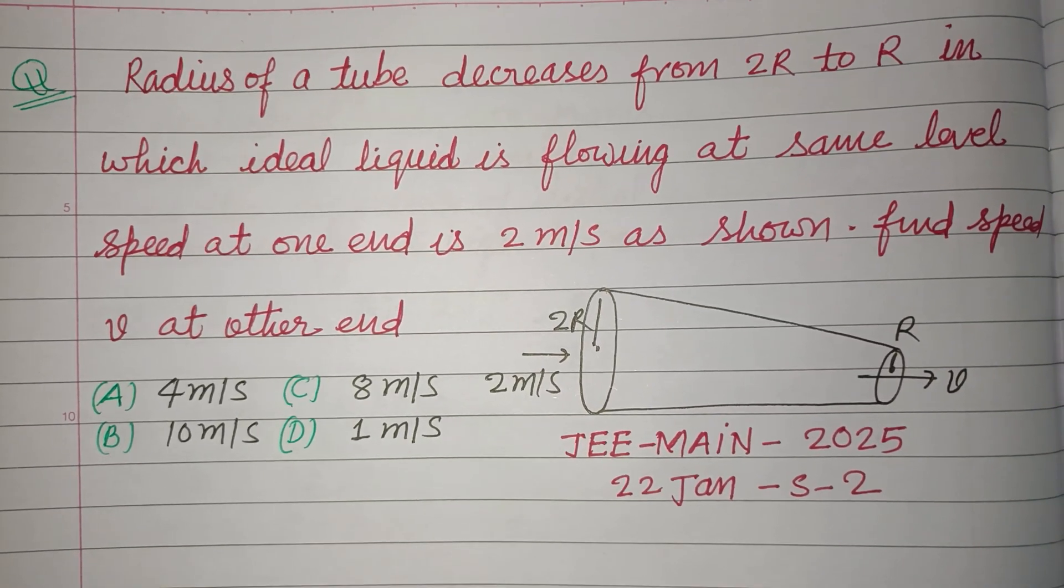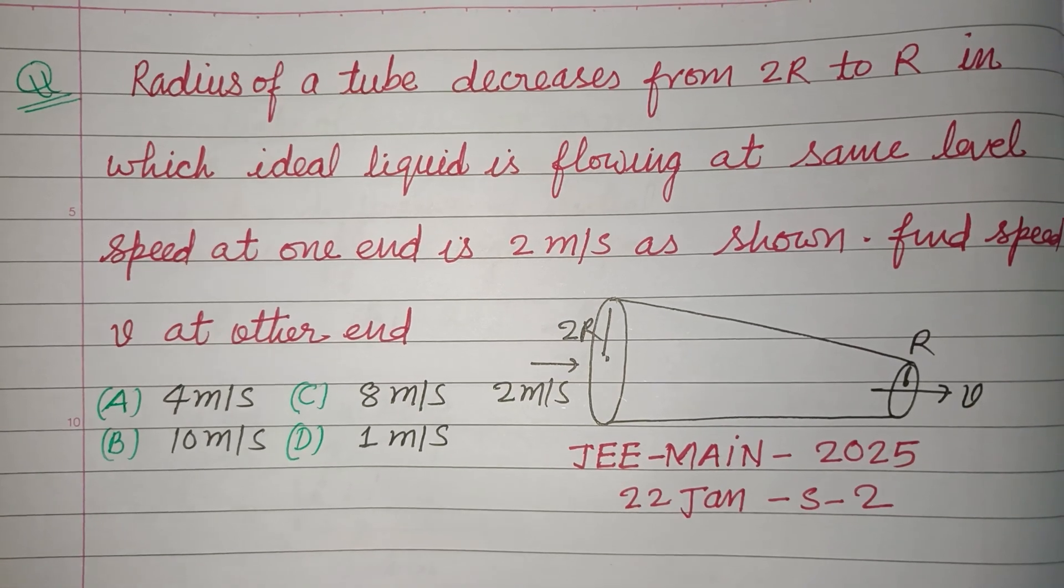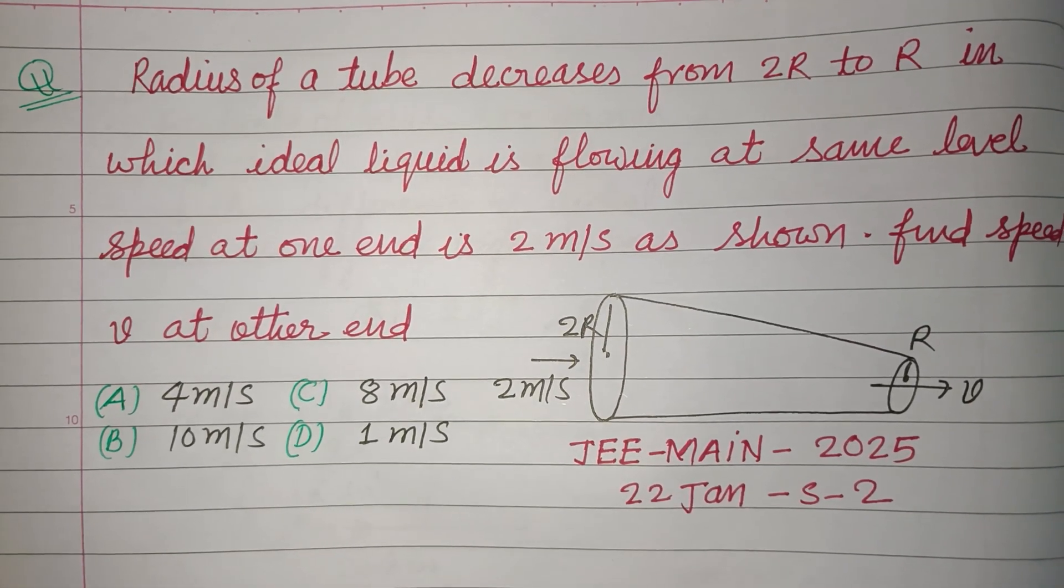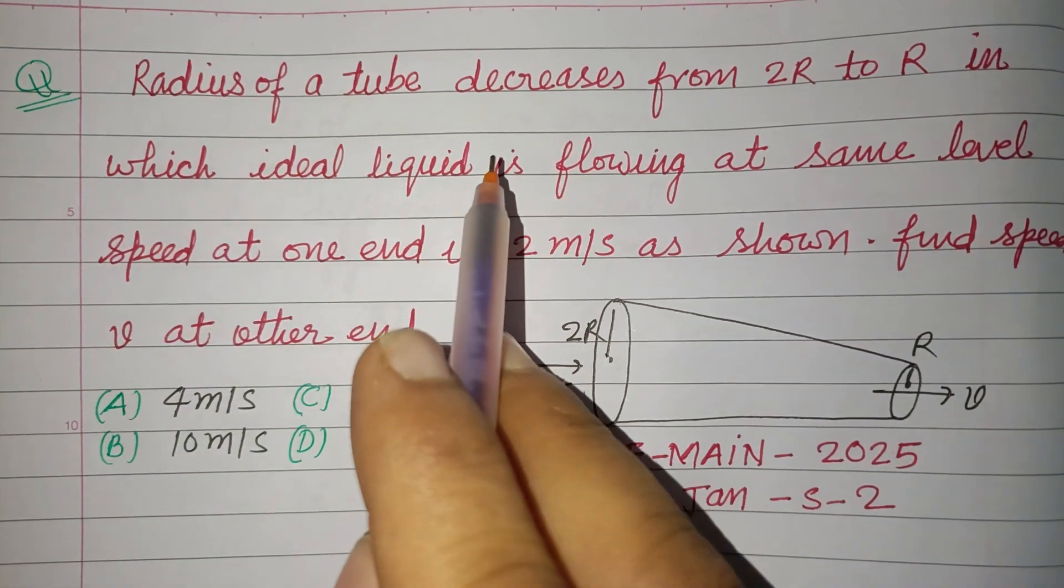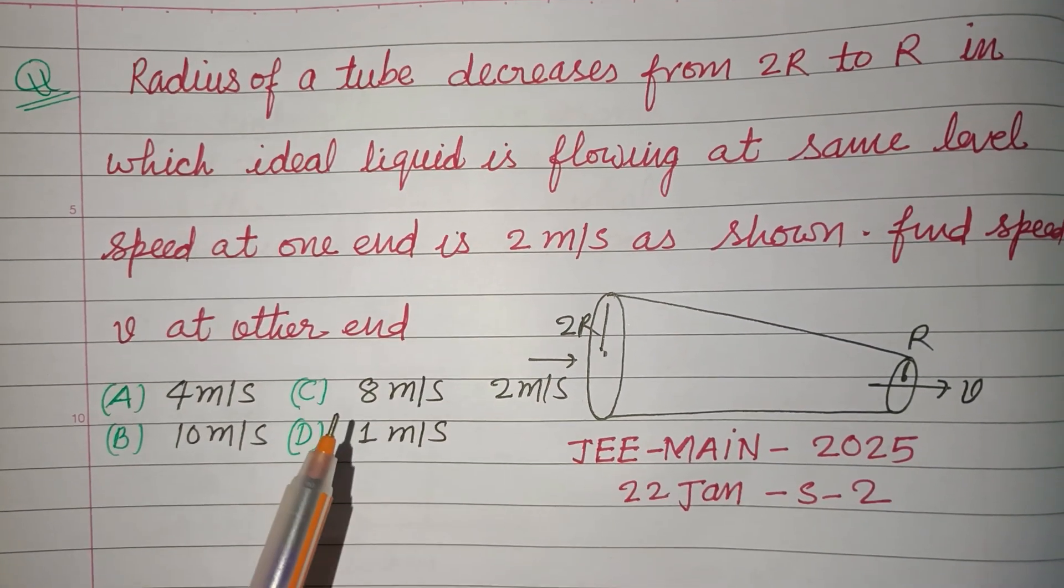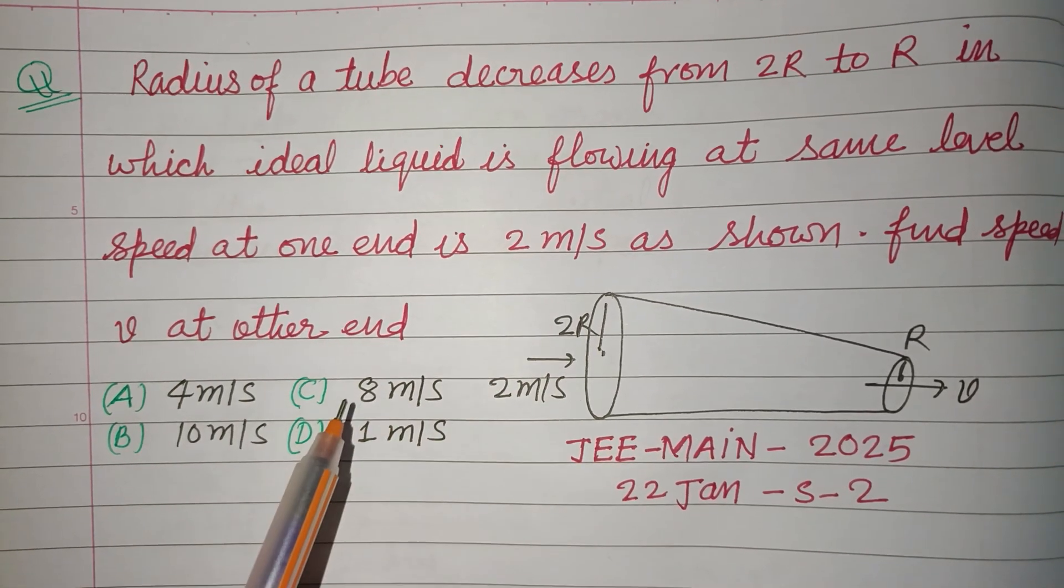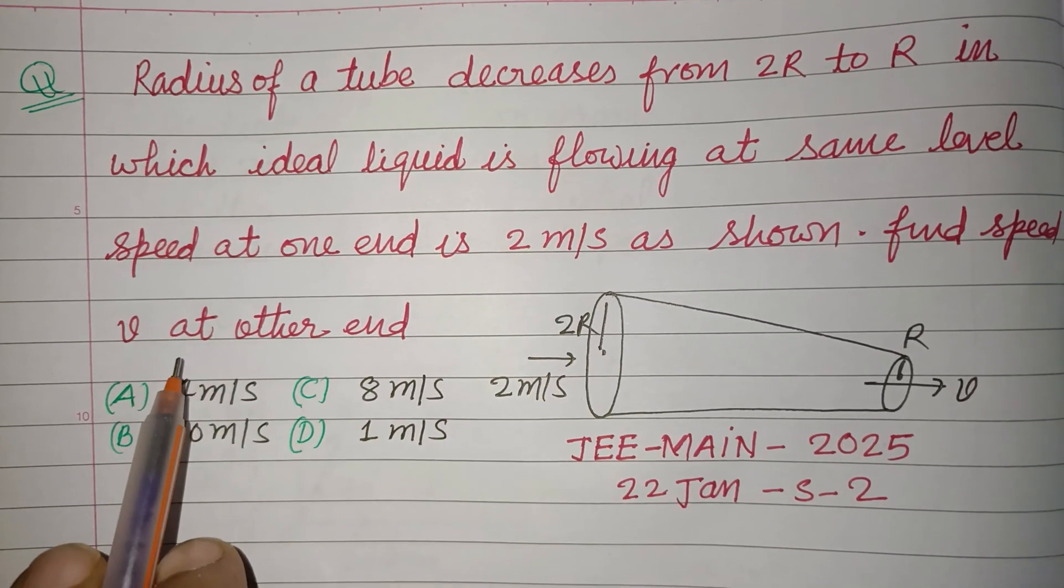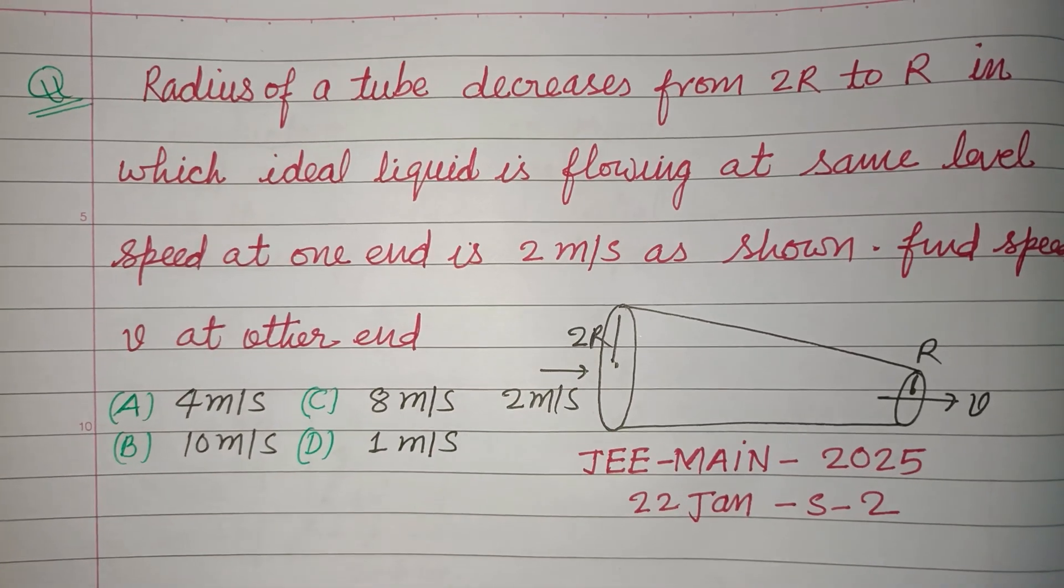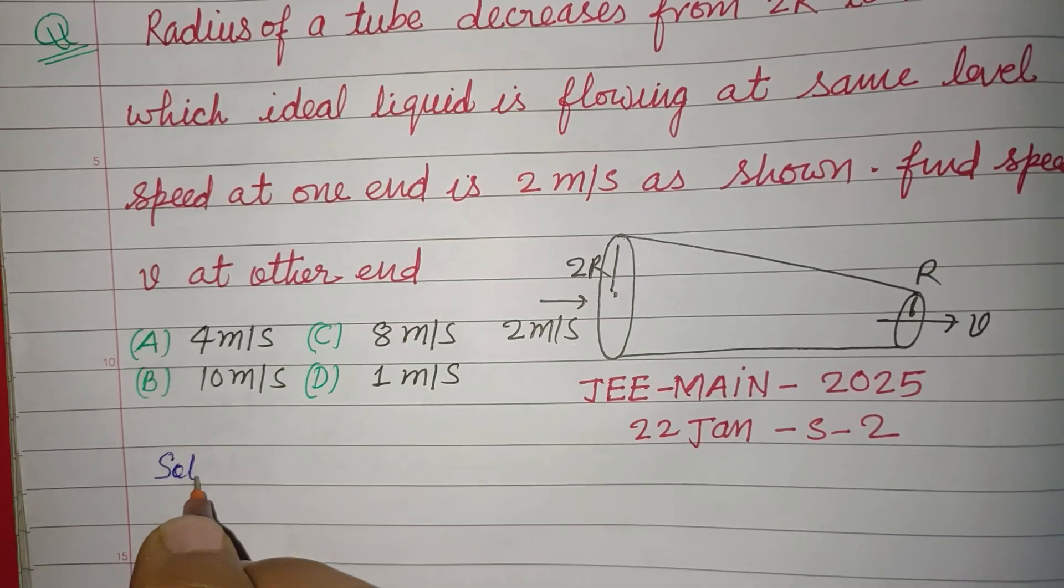Hello viewers, warm welcome to this YouTube channel. This is a question from JEE Main 2025, 22nd January shift 2. Radius of a tube decreases from 2r to r in which ideal liquid is flowing at the same level. Speed at one end is 2 meter per second as shown. Find the speed V at the other end.